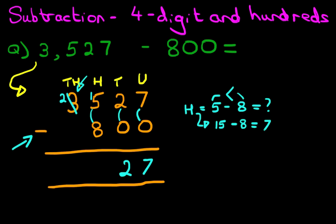So fifteen minus eight is seven. So let's write this down. Seven. The thousands column. Well, we know that three has gone. We crossed it out. Three has become two. Two minus zero is two.